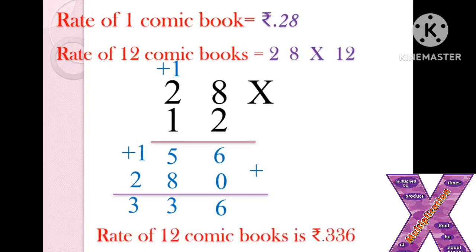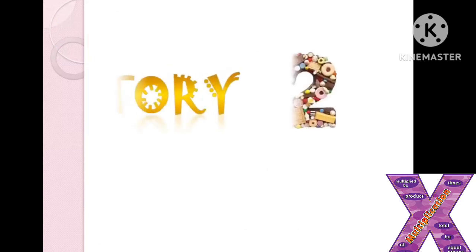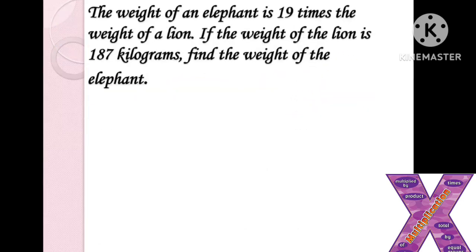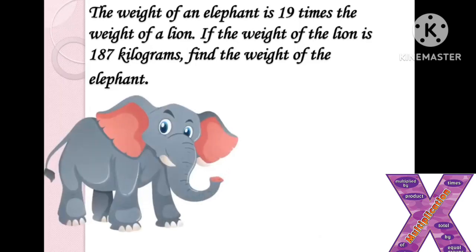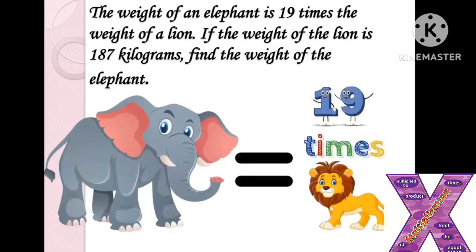Let us see another example. The weight of an elephant is 19 times the weight of a lion. If the weight of the lion is 187 kilograms, what is the weight of the elephant? The elephant's weight is equivalent to 19 times the weight of the lion. The lion's weight is given as 187 kilograms, so it should be multiplied by 19 to find the weight of the elephant.